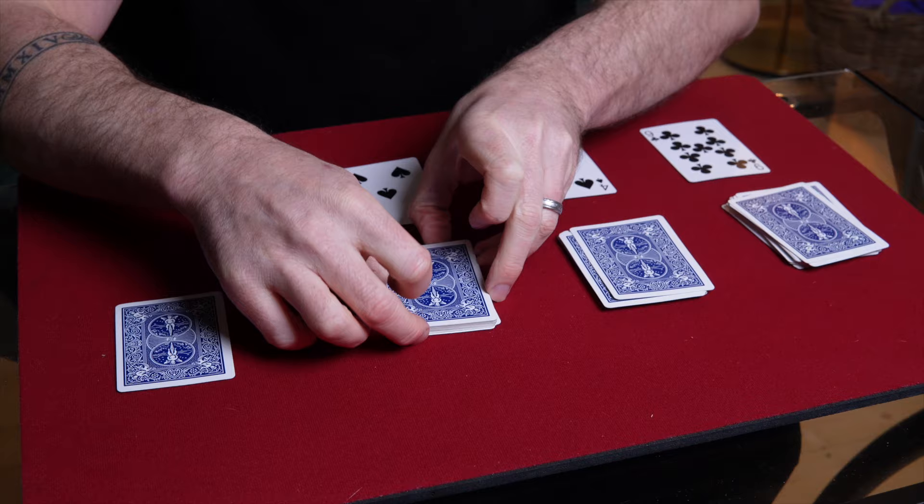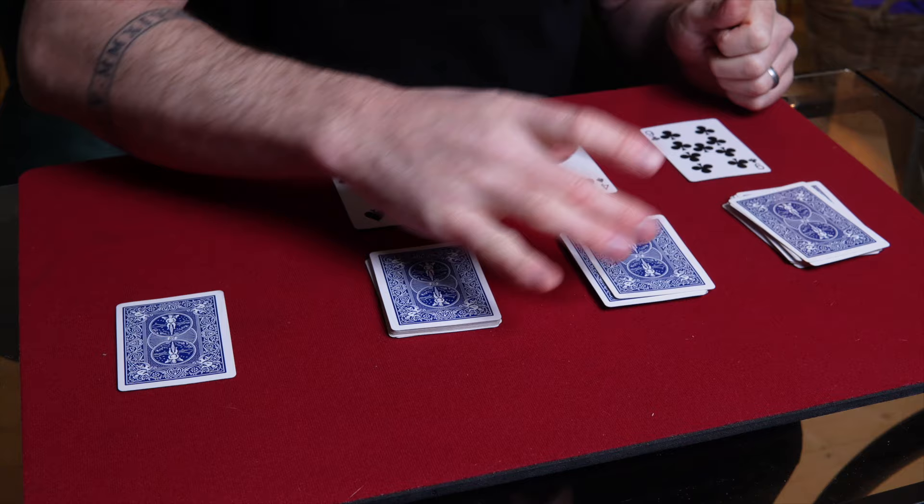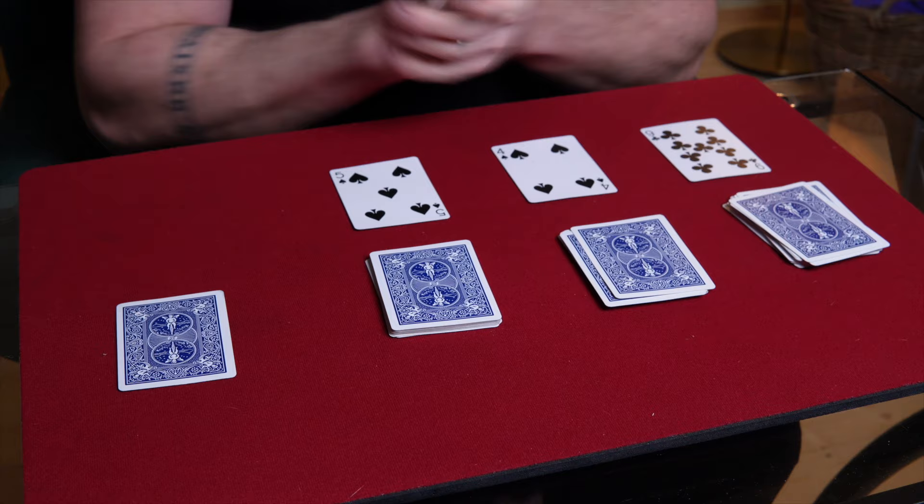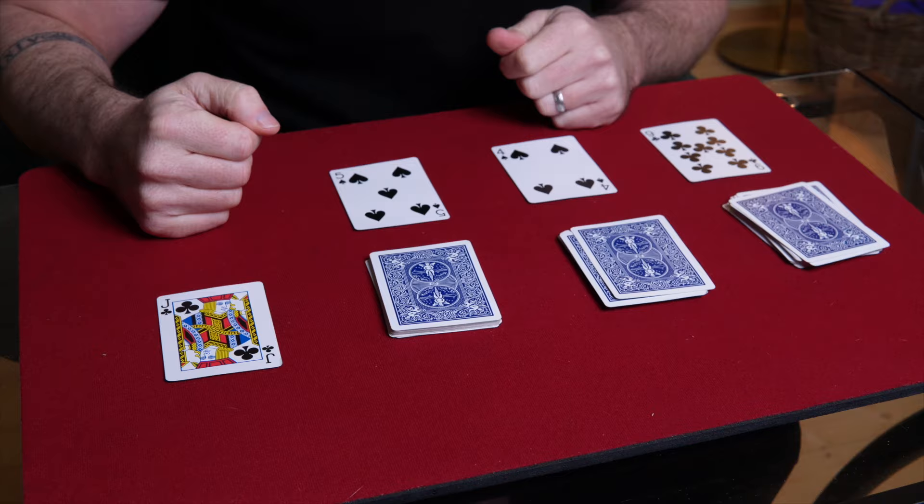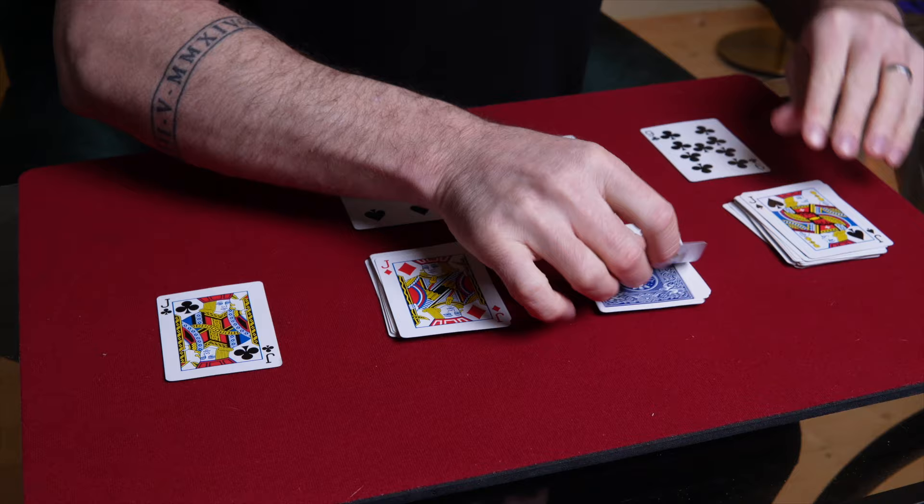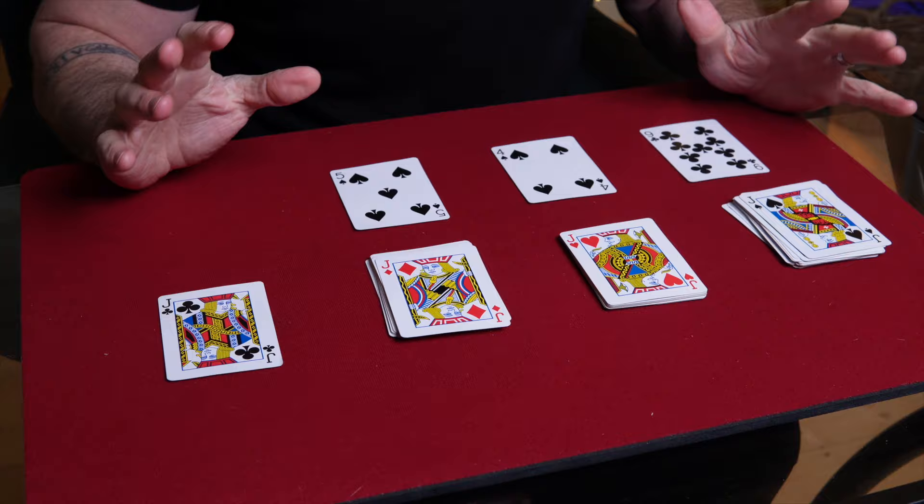So you say to them, the cards were shuffled and you literally could have cut any way you wanted and you've ended up with these three random cards. But this is so cool because before we started, I made a prediction. You show the jack and you turn each one of these over and reveal the four jacks. I think that is such a fooler. It really is. It's such a killer trick. Love it.